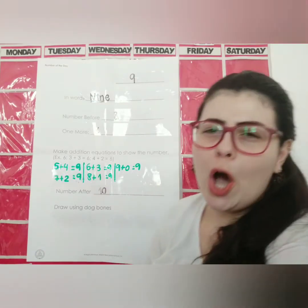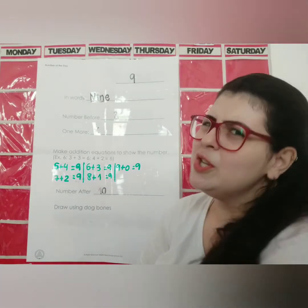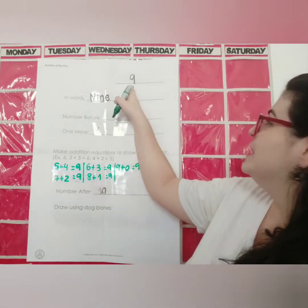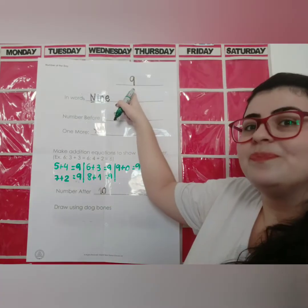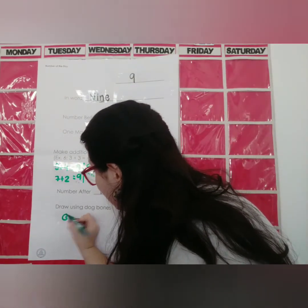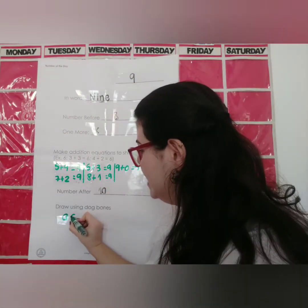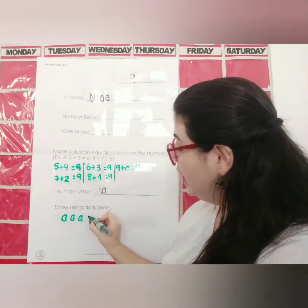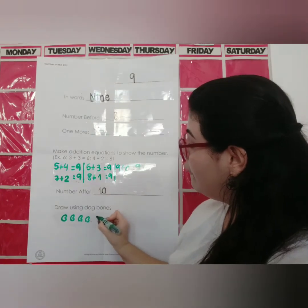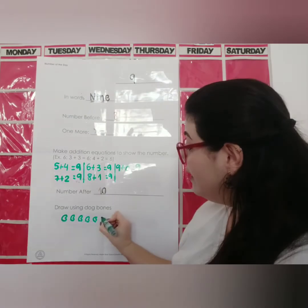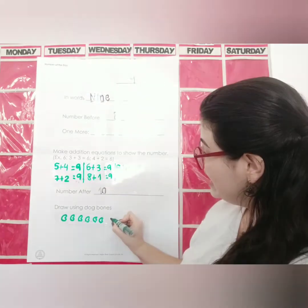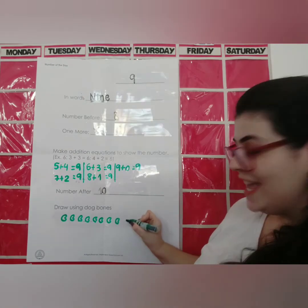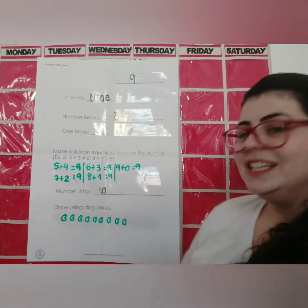Here I have drawn using dog bones, but we are not talking about dogs anymore. So we can draw beans. How many beans do I have to draw? 9. Let me draw: 1, 2, 3, 4, 5, 6, 7, 8, 9.